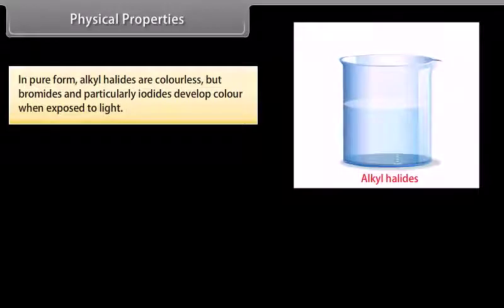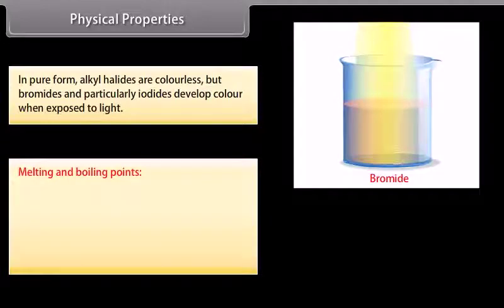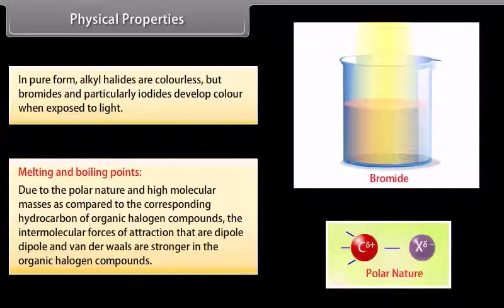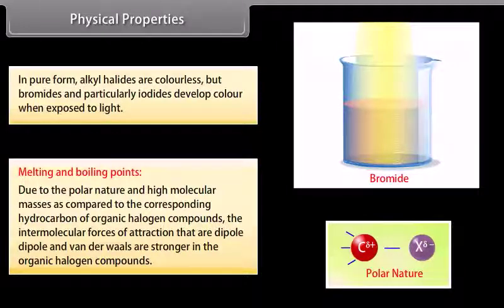In pure form, alkyl halides are colorless; bromides and particularly iodides develop color when exposed to light. Due to their polar nature and high molecular masses, as compared to corresponding hydrocarbons, the intermolecular forces of attraction — dipole-dipole and van der Waals — are stronger in organic halogen compounds.